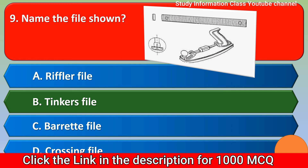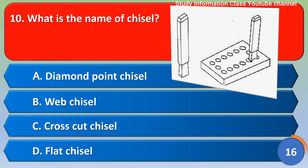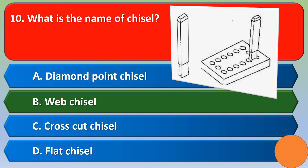Next question: what is the name of the chisel shown? Option A) diamond point chisel, B) web chisel, C) cross cut chisel, D) flat chisel. The correct answer is option B, web chisel.